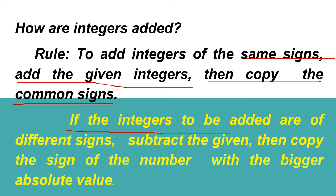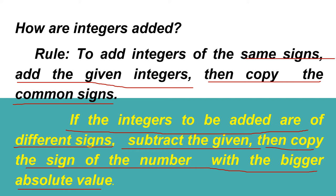But if the integers to be added are of different signs, for example, there's one positive and one negative, you are going to subtract the given. Then copy the sign of the number with the bigger absolute value.